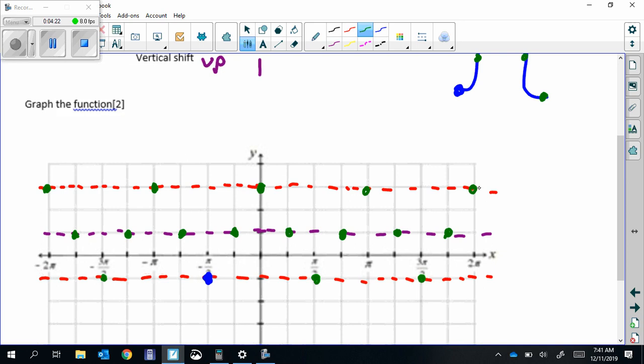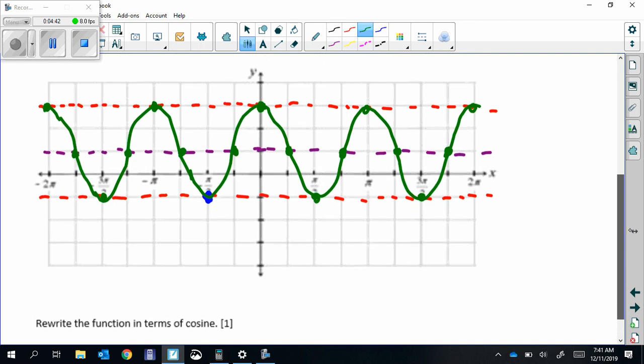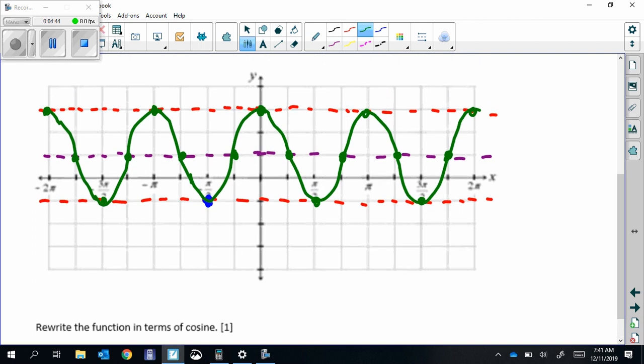Then draw the curve that connects all those dots, all the points. Down at the bottom, that's actually supposed to say sine, because it was a cosine. We're going to rewrite the function in terms of sine.